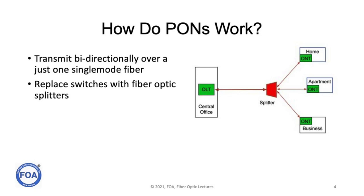In the opposite direction, from the users, when they send a signal to the central office, the signal goes on their single fiber to a splitter, which combines all the signals onto one output fiber, which then connects to the central office.